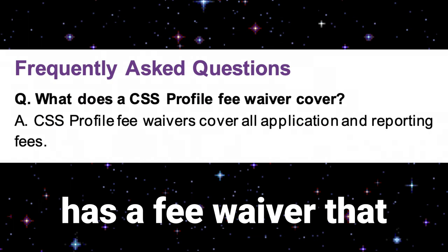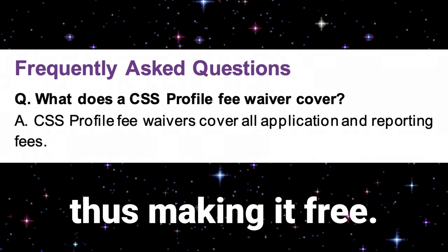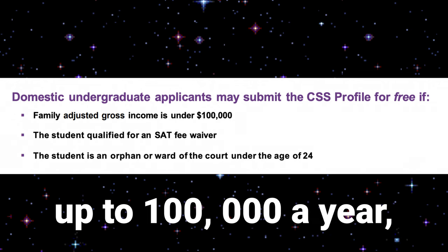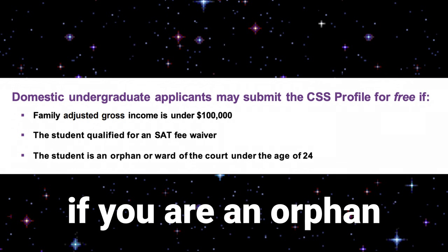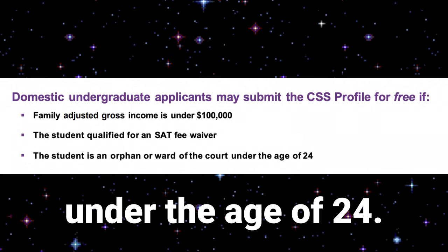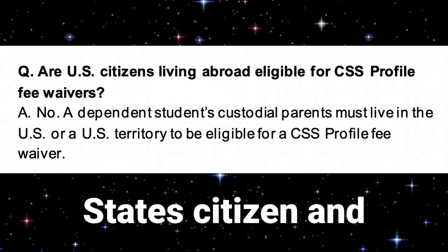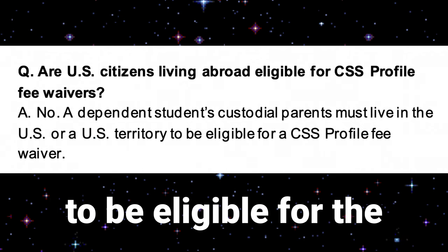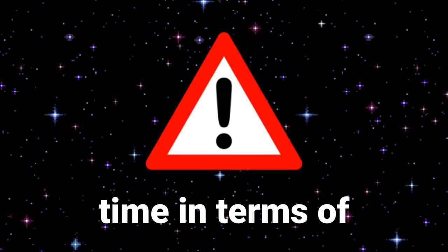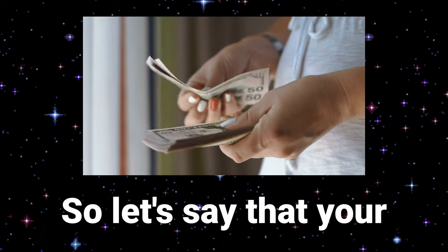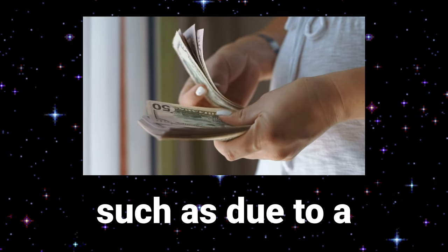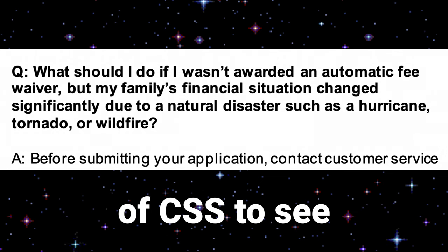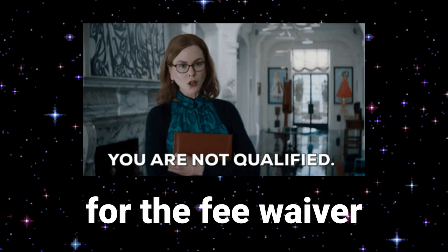For the CSS Profile, there is a fee waiver that covers all application and reporting fees, making it free for those who qualify. Domestic undergraduate applicants qualify if their family makes up to $100,000 a year, if they qualify for an SAT fee waiver, or if they are an orphan or ward of the court under age 24. However, if you are a U.S. citizen classified as a dependent student, your custodial parent must live in the U.S. or a U.S. territory to be eligible. If your economic situation changes drastically — such as due to a natural disaster — contact CSS customer service to see what can be done.